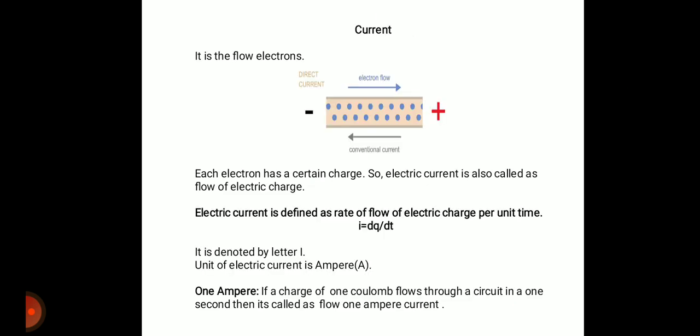Next is electric current. Current is the flow of electrons, and since each electron has a certain charge, electric current is the flow of electric charge. The definition: it is the rate of flow of electric charge per unit time, given by I = dq/dt. The notation is letter I, and we measure current in ampere.